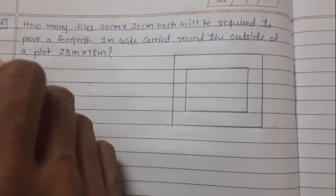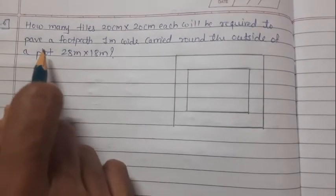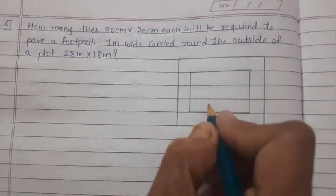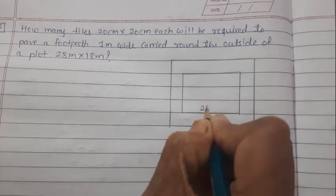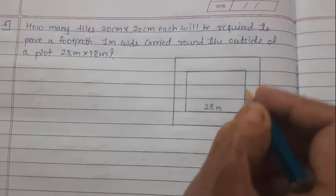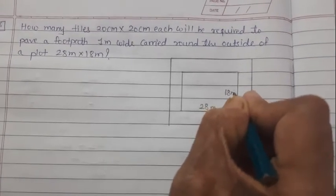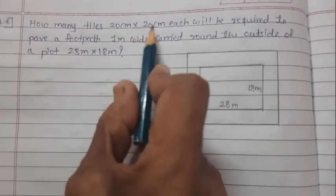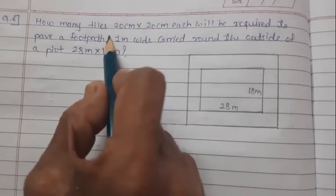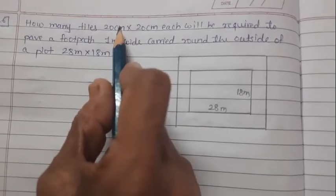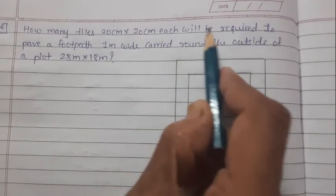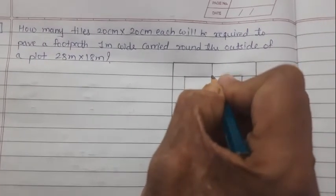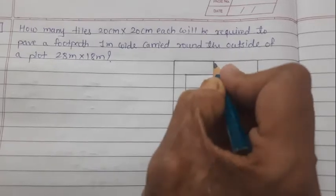So what is given in the question? The length of the plot is 28 meter and the breadth is 18 meter. The tiles are 20 by 20 cm, meaning the shape of the tile is square. It is required to pave a footpath 1 meter wide.